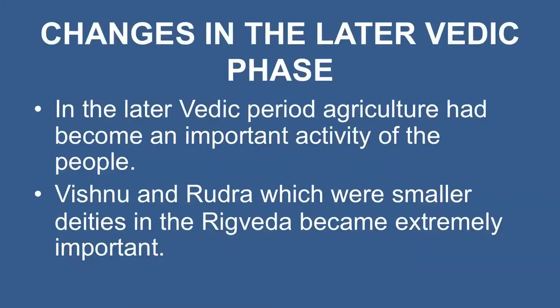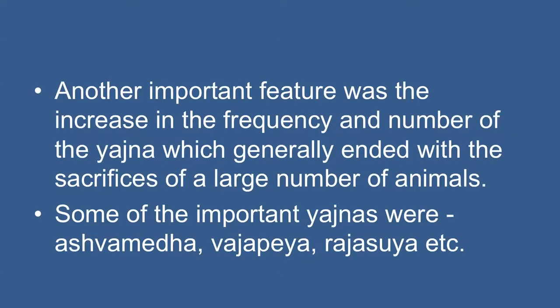In the later Vedic period, agriculture had become an important activity and changes in material life naturally resulted in a change in attitude towards gods and goddesses. Continuous interaction with the local non-Aryan population also contributed to these changes. Thus, Vishnu and Rudra, which were minor deities in the Rig Veda, became extremely important. However, there is no reference to the different incarnations or avatars of Vishnu in any of the later Vedic texts. Another important feature was the increase in the frequency and number of Yajna, which generally ended with the sacrifice of a large number of animals. The most important Yajnas were Ashwamedha, Vajapeya, and Rajasuya, familiar from the stories of the Mahabharata and Ramayana.